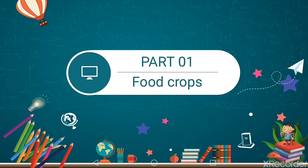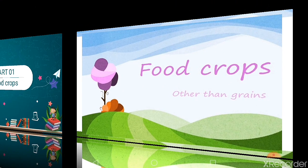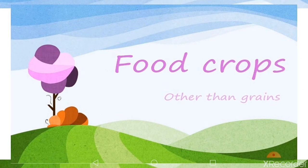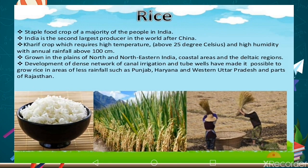Now we are going to talk about food crops. First of all, rice — it is the staple food crop of the majority of the people in India. India is the second largest producer of rice in the world, after China.